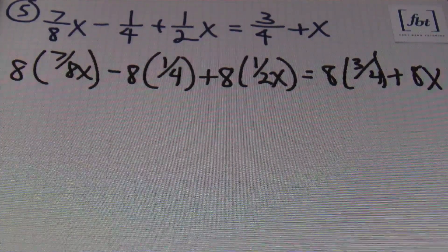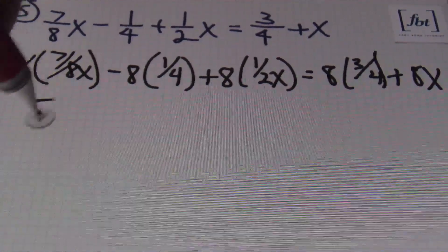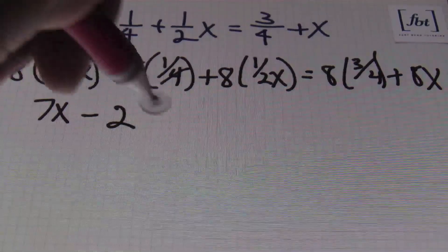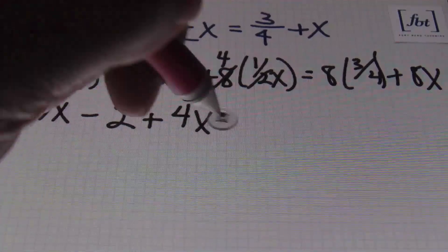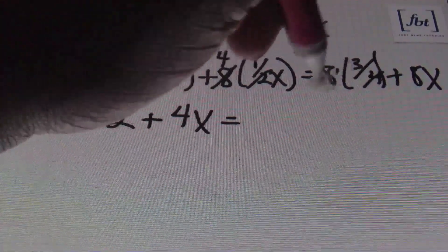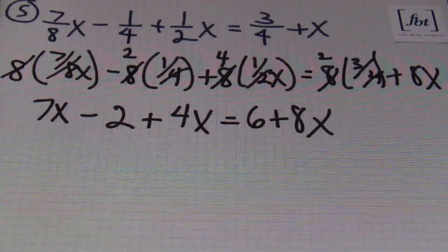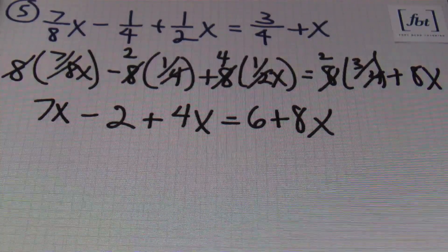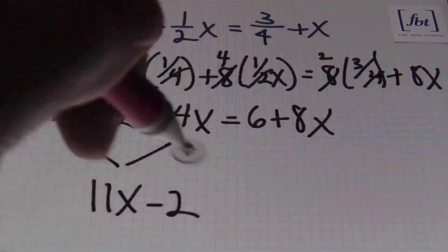I'll have eight times seven-eighths x minus eight times one-fourth plus eight times one-half x equals eight times three-fourths plus eight times x. Even though the last term x didn't have a fraction, we still had to multiply each and every term by eight, including the x. Simplifying: the eight cancels out to give seven x; four goes into eight twice, so two times one gives two; two goes into eight four times, so four times one gives four x. On the right side, four goes into eight twice, and two times three is six, plus eight x.